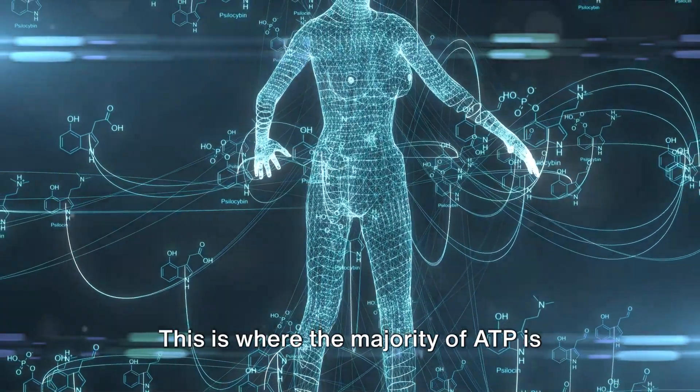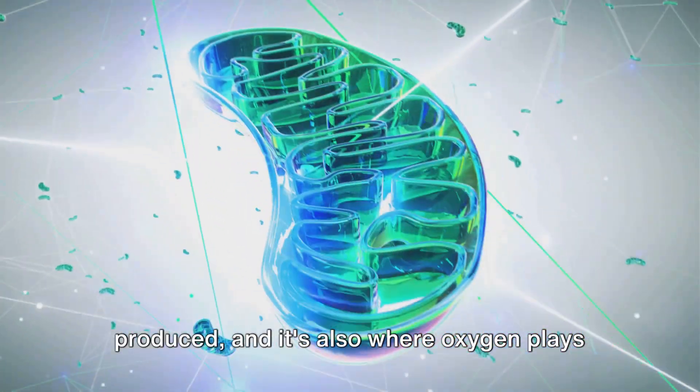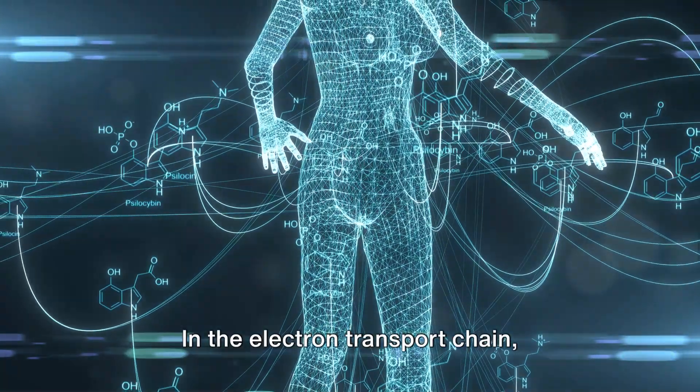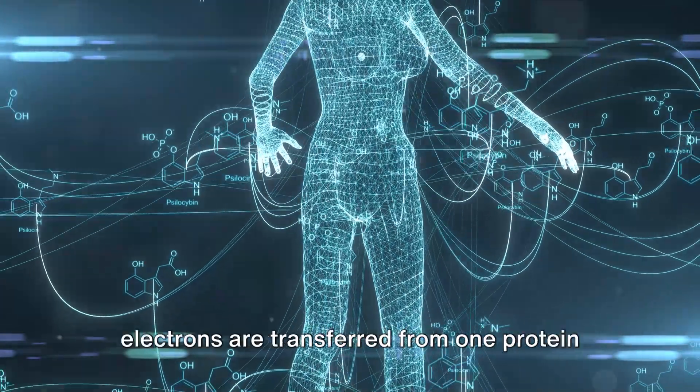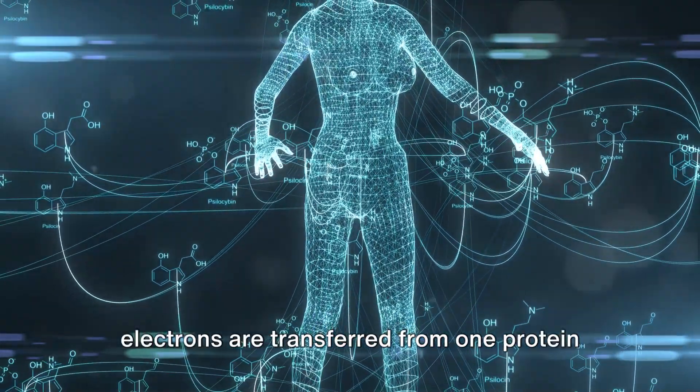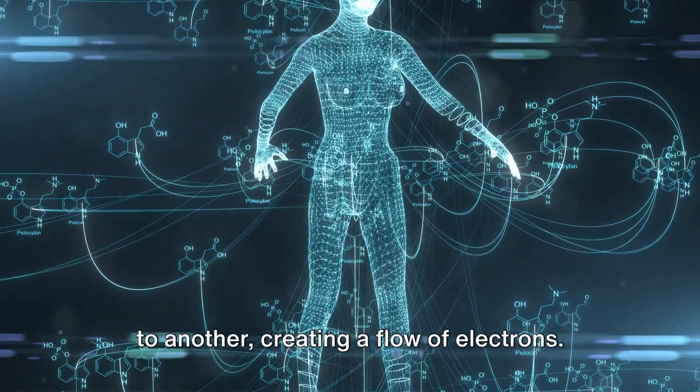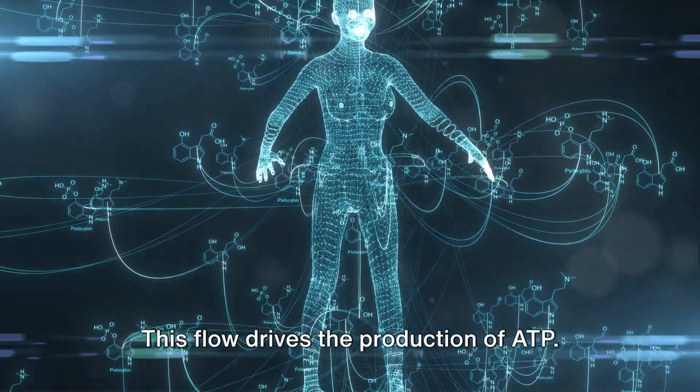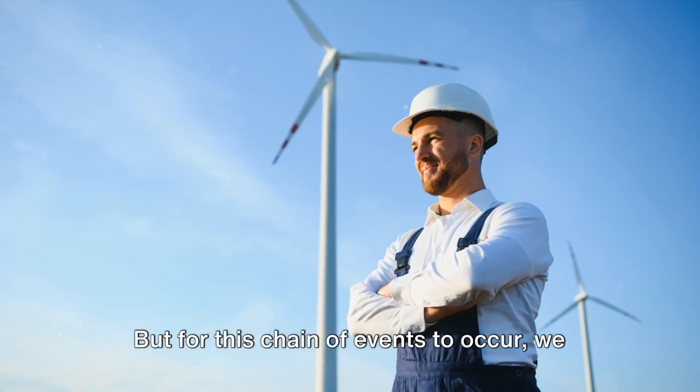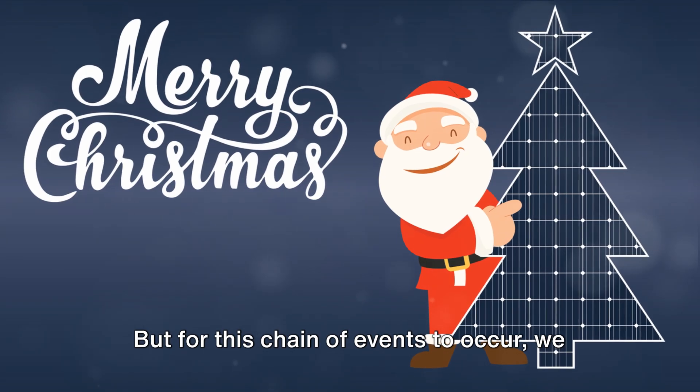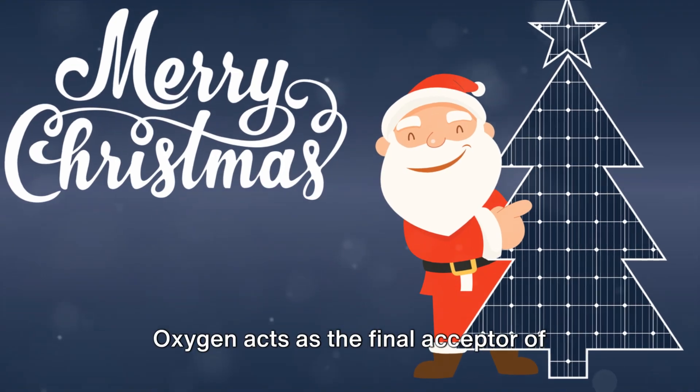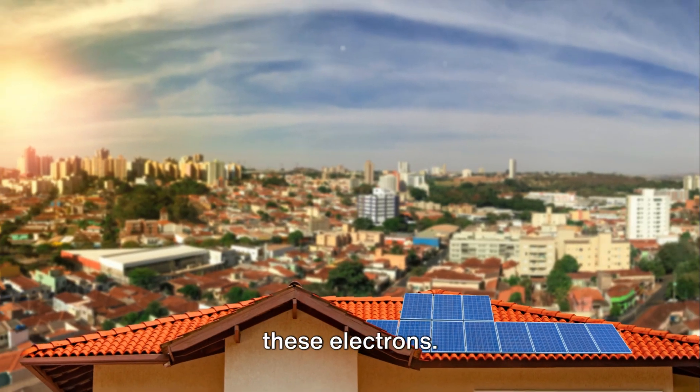This is where the majority of ATP is produced, and it's also where oxygen plays a vital role. In the electron transport chain, electrons are transferred from one protein to another, creating a flow of electrons. This flow drives the production of ATP. But for this chain of events to occur, we need oxygen. Oxygen acts as the final acceptor of these electrons.